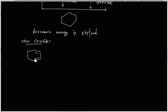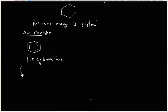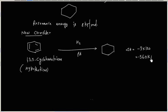Consider the case of 1,3,5-cyclohexatriene. This is a hypothetical molecule. Upon hydrogenation, it gives cyclohexane. Three moles of hydrogen is used in this case. Heat of hydrogenation expected is 3 into 120, that is 360 kJ per mole.